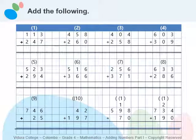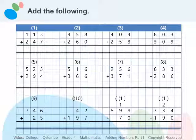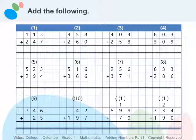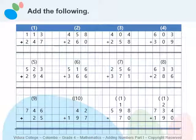Final sum: seven hundred and thirty-four plus one hundred and ninety — the answer is nine hundred and twenty-four. Check your answers for all twelve sums.